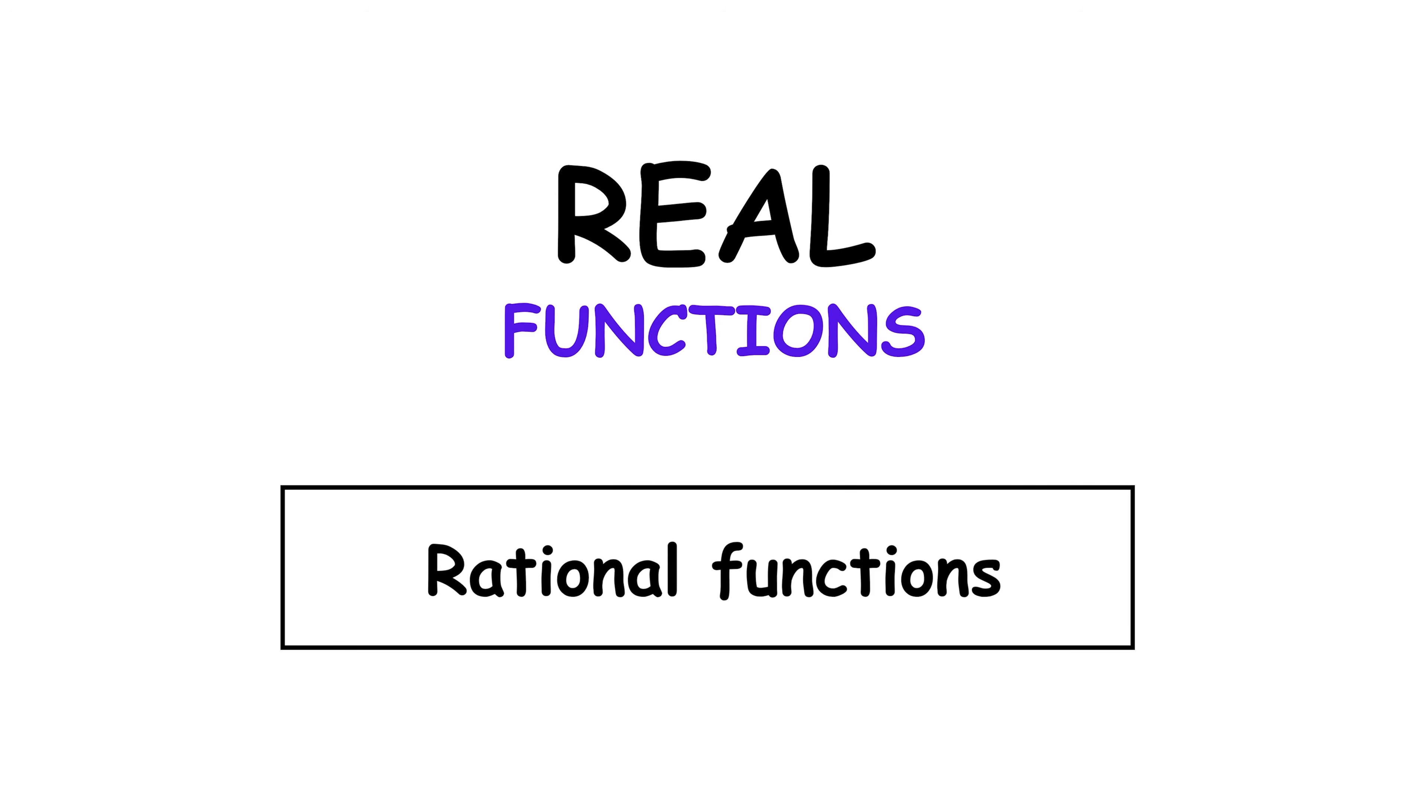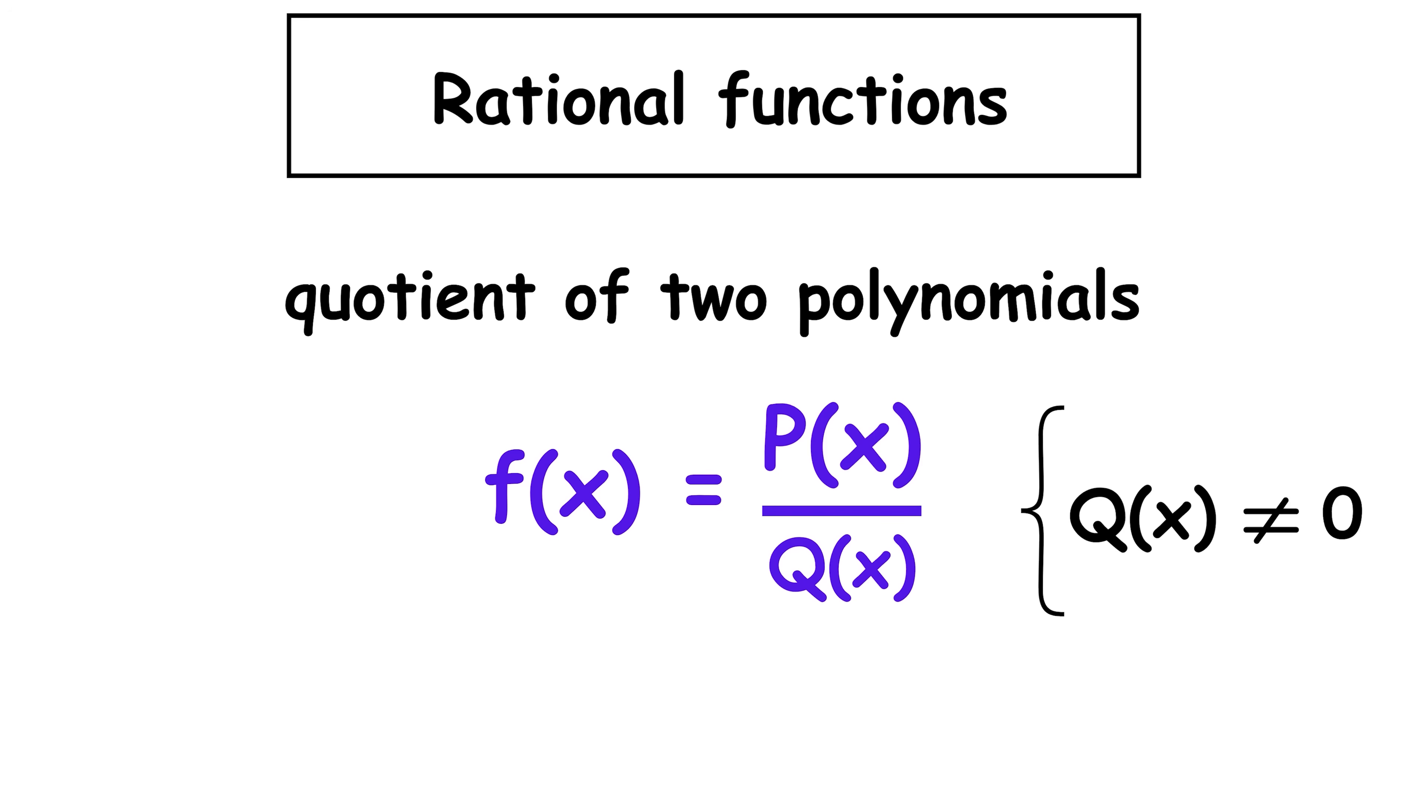Rational functions. Rational functions are defined as the quotient of two polynomials, f of x equals p of x over q of x, where q of x does not equal 0.